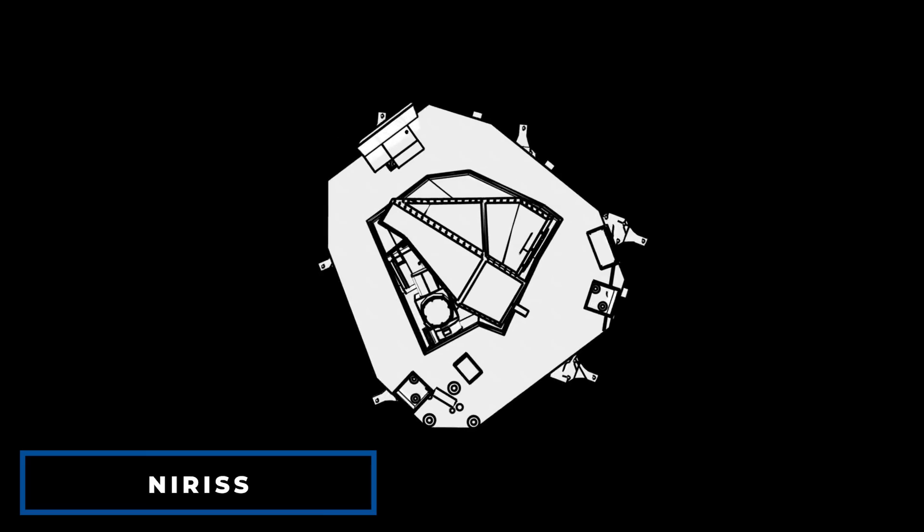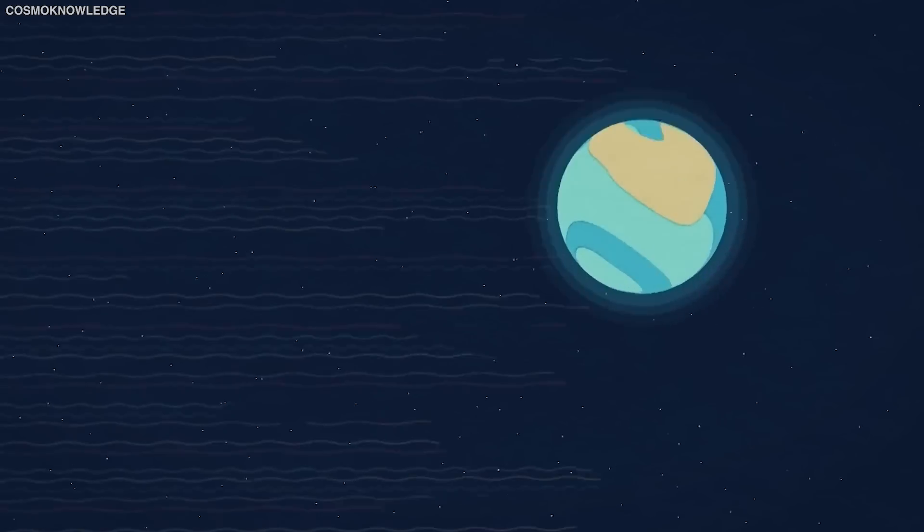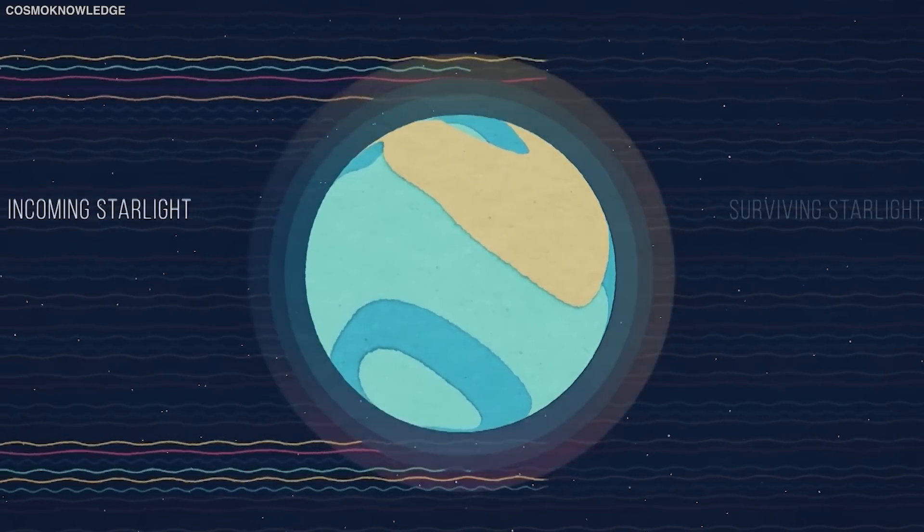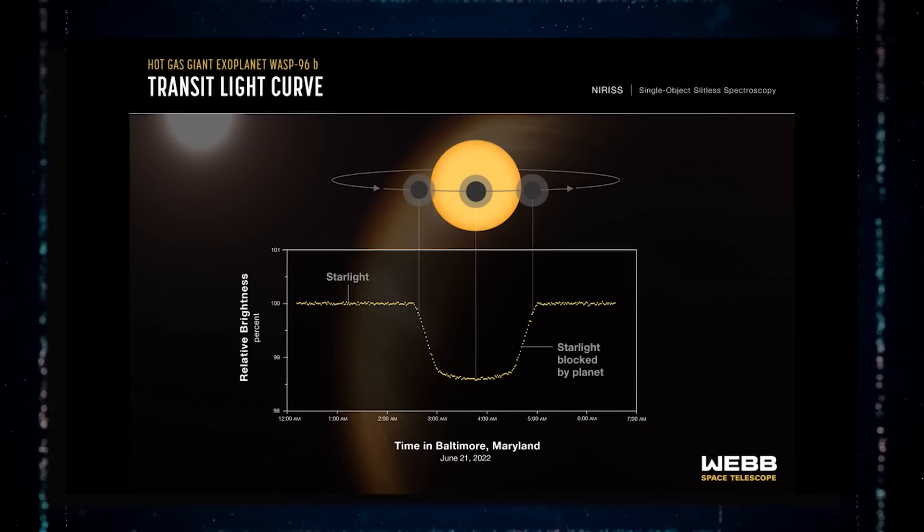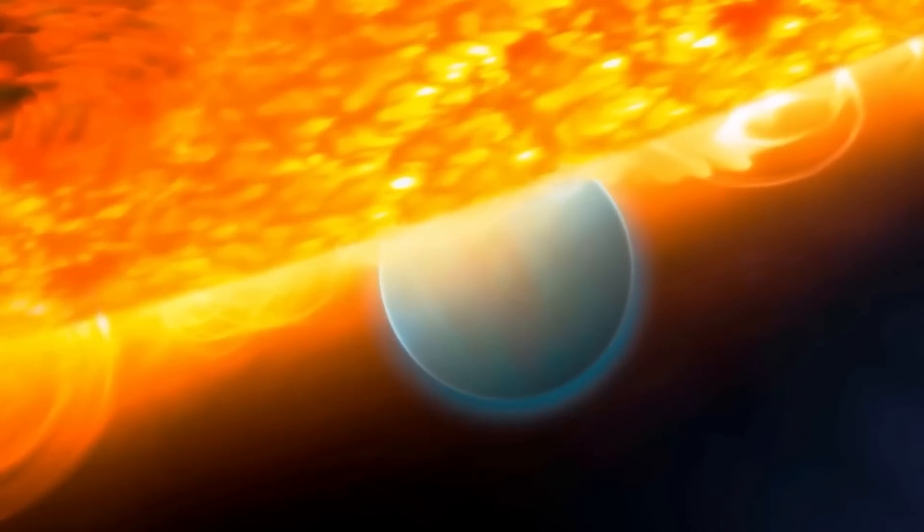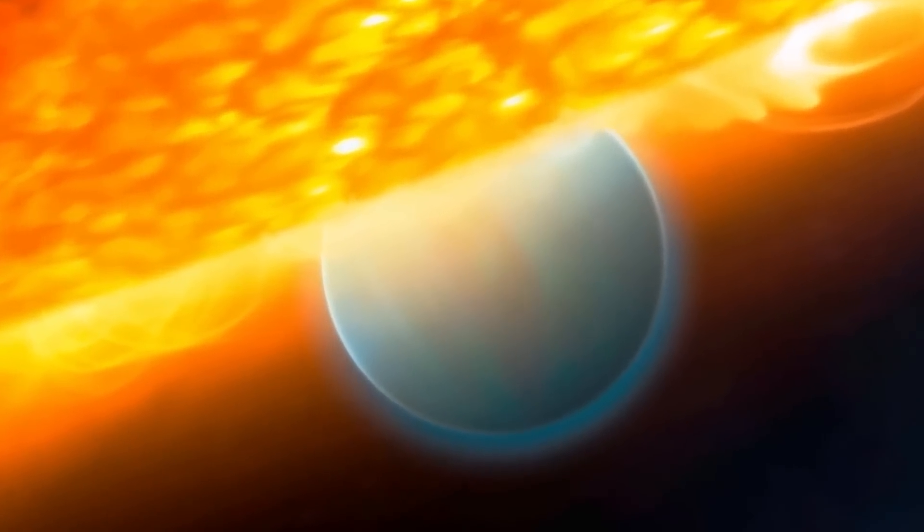The NIRIS, placed on JWST, measured the light from WASP-96b for around six and a half hours and plotted the data acquired on a graph, and this data suggests that there may be water on this planet.